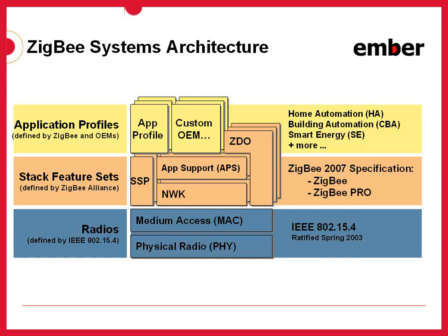On top of the radio functionality, we have a collection of layers known as the stack feature set. This is basically the network layer behavior defined by the ZigBee Alliance, detailed in the ZigBee 2007 specification. There are actually two feature sets defined in that specification — ZigBee and ZigBee Pro — but we'll discuss that in more detail in the stack concepts section.